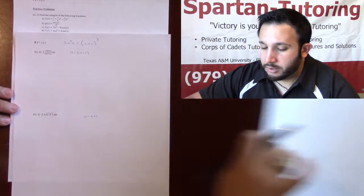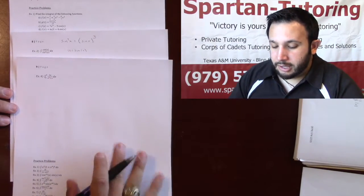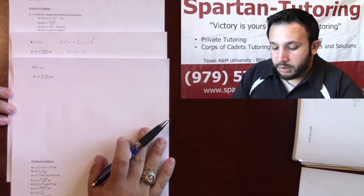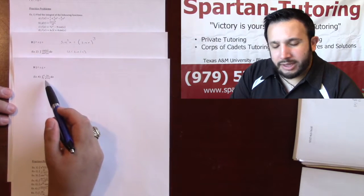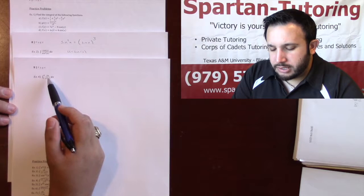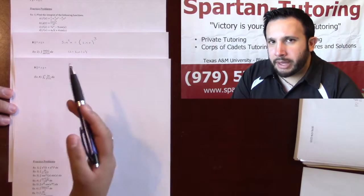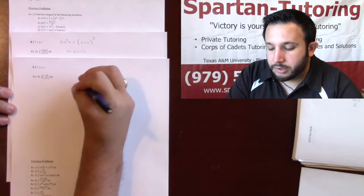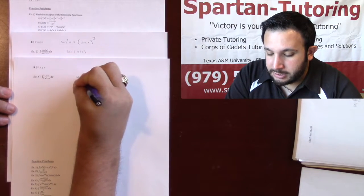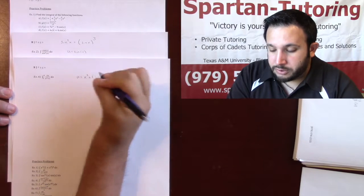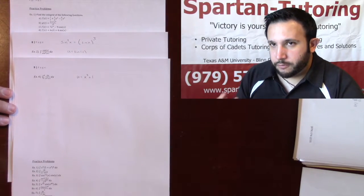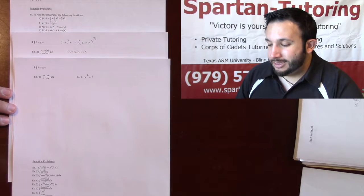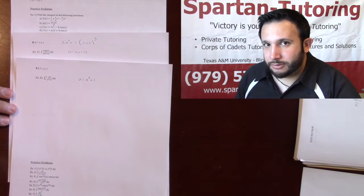Finally, last one that we'll be doing is number four here, and what I have is 2x over x squared plus one. Notice how x squared plus one is a little bit bigger than 2x. It's got a higher power. You don't really have a function inside of anything else, so I'm just going to go with the bigger one, and so u in this case will be x squared plus one. Like I said, your first instinct needs to be what's inside of something. Then, if you don't have anything inside of anything, then just pick the bigger one.